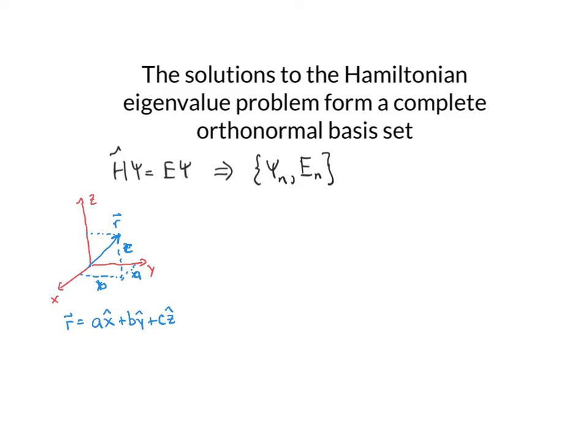So any vector in Cartesian space can be expressed as a linear combination of unit vectors — where unit length equals one, meaning these are normalized vectors whose length is equal to one. And those unit vectors form a complete set because I can describe any other vector in Cartesian space just by using those unit vectors.